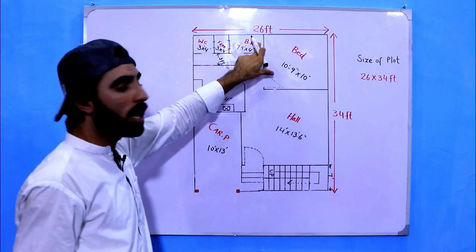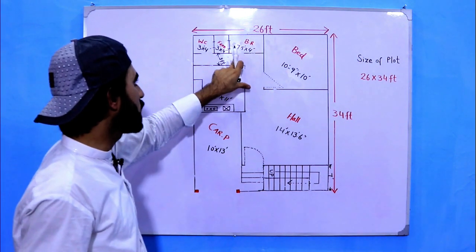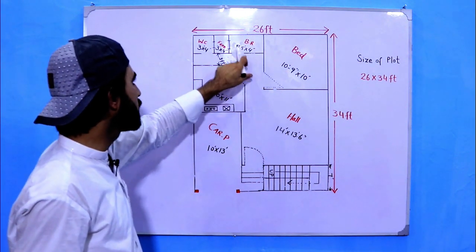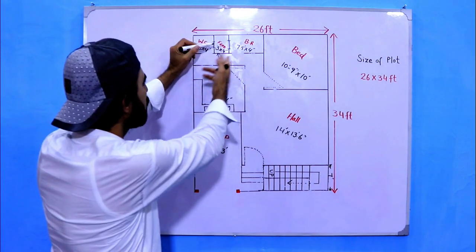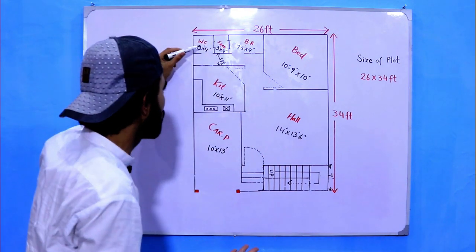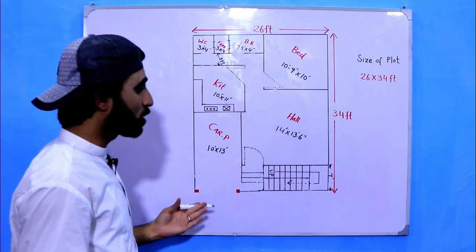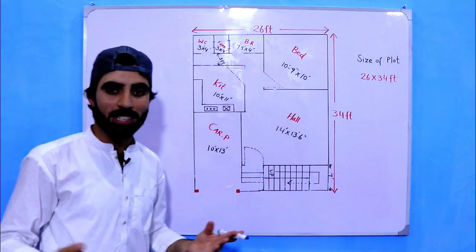And this is a bath or washroom which size is 7.5 feet by 4 feet. This is especially for open to sky, actually for the ventilation for bathroom and also for water closet.